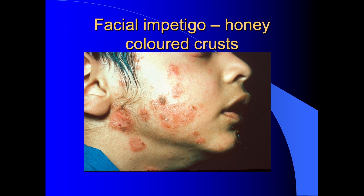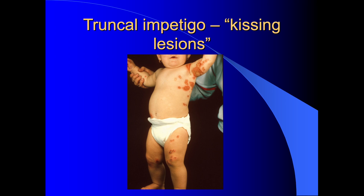Here's an example of impetigo affecting the face. Three or four days ago, this lad developed an oozy, weepy red patch below his ear, and he's developed lesions around there which have extended over the side of his face. The lesions often ooze and weep, and this produces honey-coloured crusting, which is typical of impetigo. Here's an example of impetigo affecting a baby — lesions started under the armpit and spread onto the adjacent skin of the upper chest due to direct contact, creating so-called kissing lesions, spreading fairly rapidly over four or five days onto the thigh.